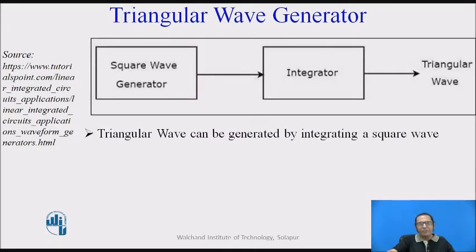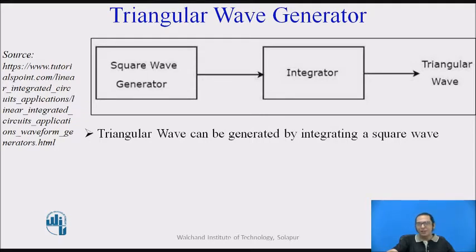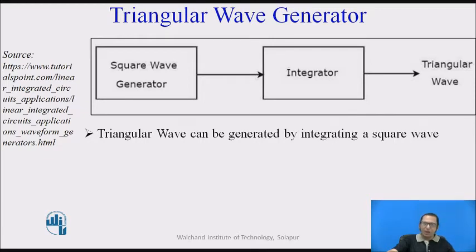The triangular wave generator can be very simply designed using two different circuits. The first one is a square wave generator. I have to first design a square wave generator, and if I give the output of the square wave generator to an integrator, the output of the integrator is a triangular wave. So if I pick up the signal at the first point, I get a square wave; if I pick up the signal at the second point, I get a triangular wave. This kind of circuit can generate both signals — square wave and triangular wave.